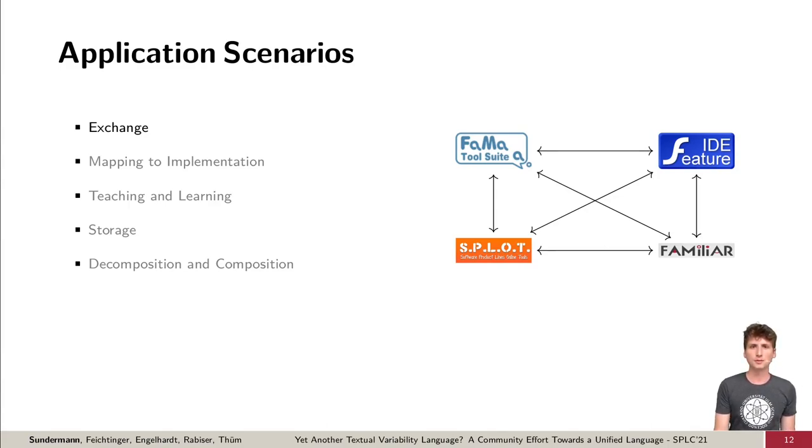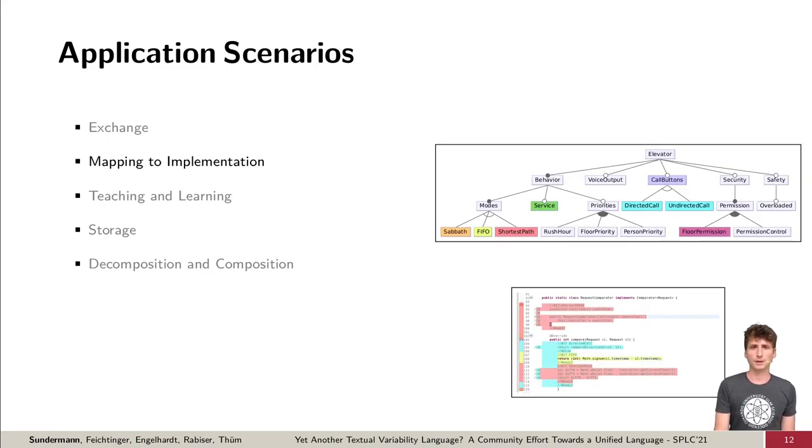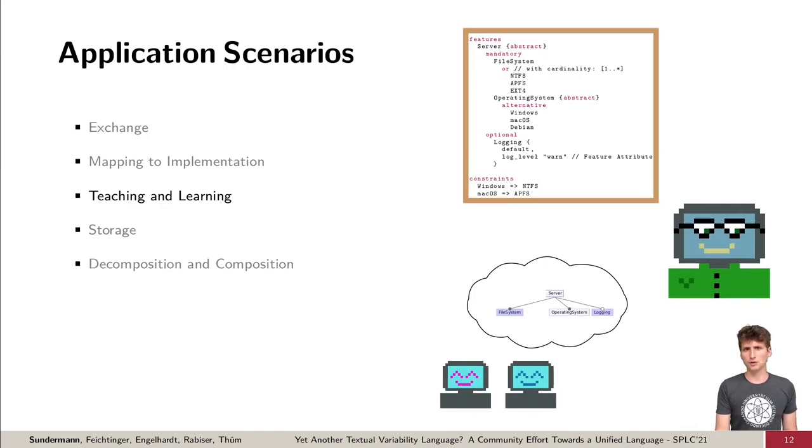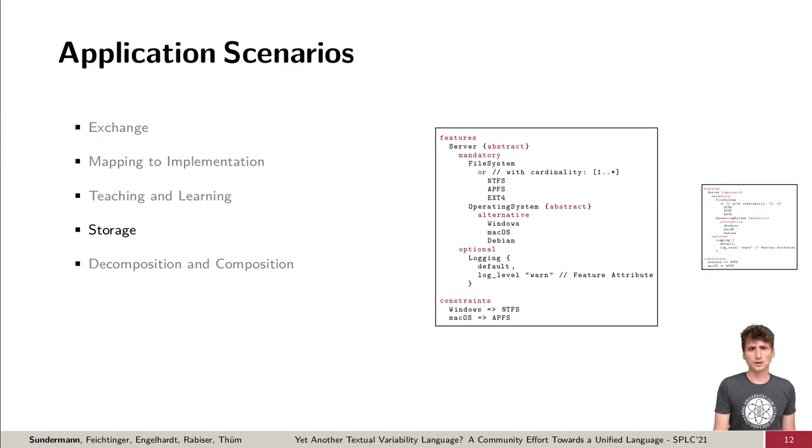A variability language should be suitable for exchange between different tools. Thus, it should be specified in a serializable format like a context-free grammar and optimally come with a library for reading and writing the syntax. Another aspect is mapping features to implementation artifacts. This could be realized by for example tying lines of code to specific features or with a more simplified version where we only differentiate between features that correspond to the implementations or ones that are just used for structuring. The language should also be readable by humans and easy to understand. This can be supported by providing useful documentation and examples. Also there should not be a large overhead which increases the size when storing variability models.